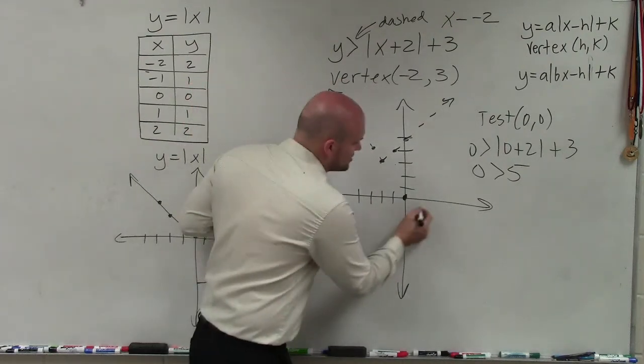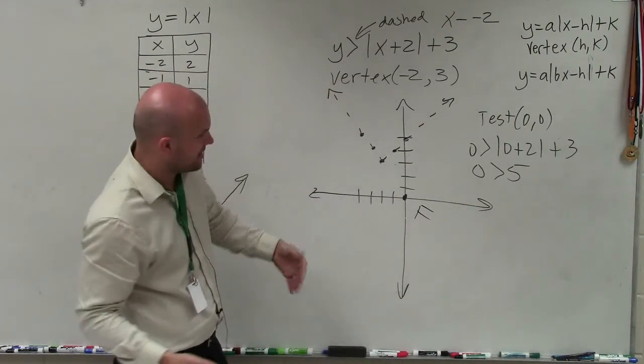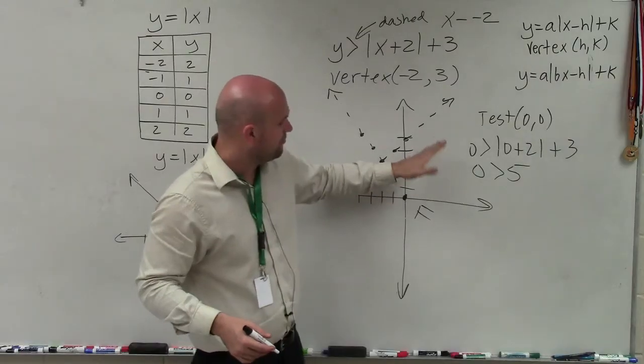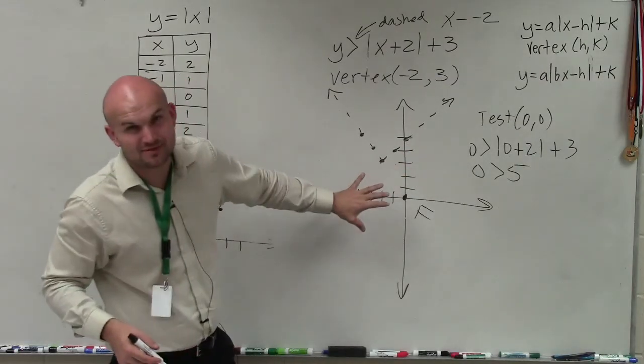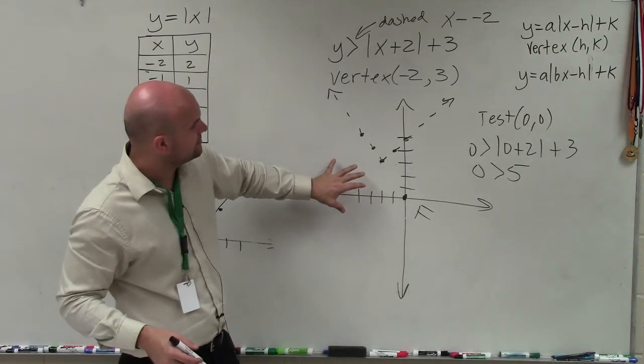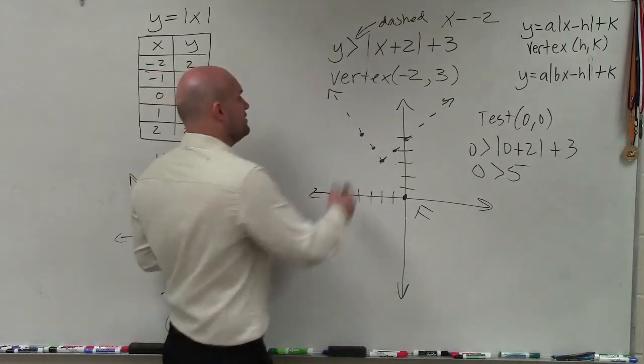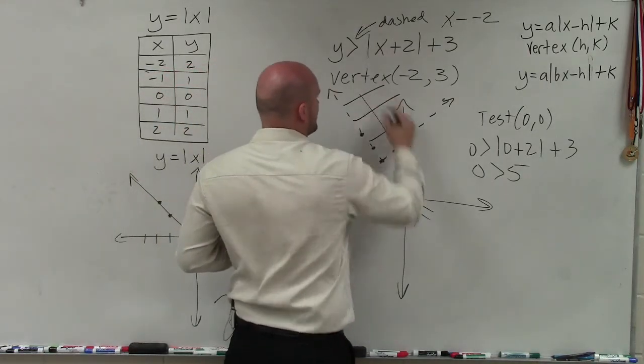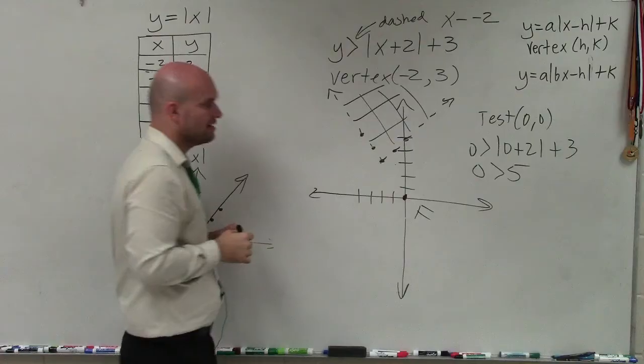Well, that is obviously false. So it's false outside of the absolute value. That means any other point that I plot outside this absolute value graph is going to be false as well. That means all the points inside or above are going to be true.